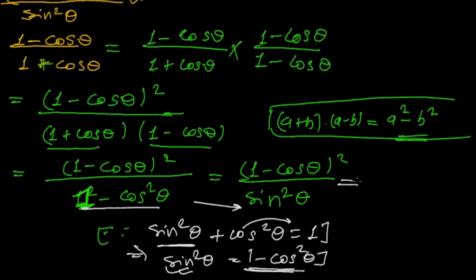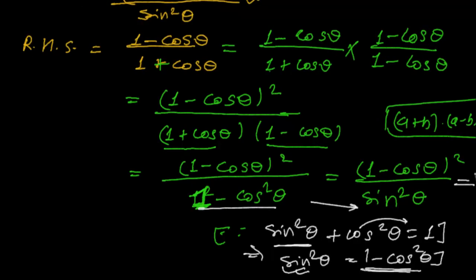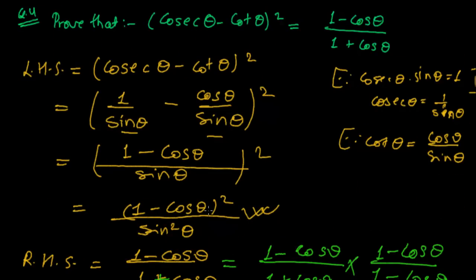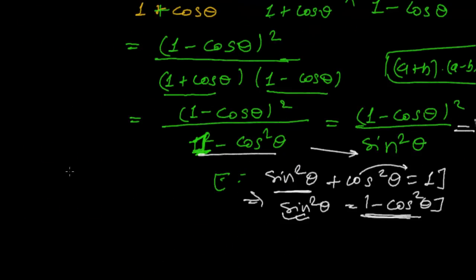So we get the same result as the left hand side. The right hand side is also 1 minus cosine theta whole square upon sine squared theta, and our left hand side is also 1 minus cosine theta whole square upon sine squared theta. So it has been proved. LHS equals RHS — proved.